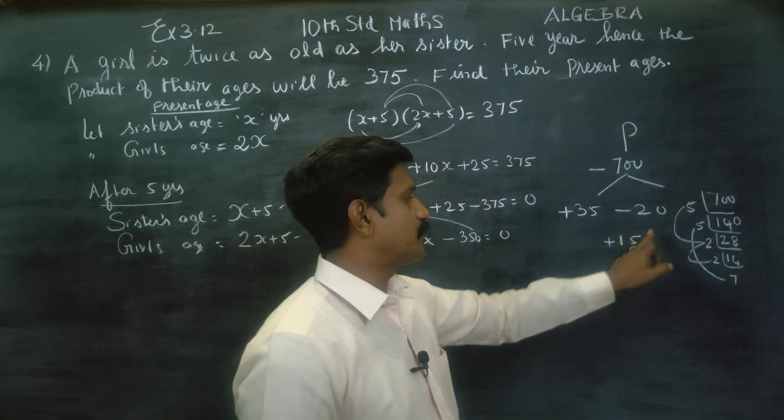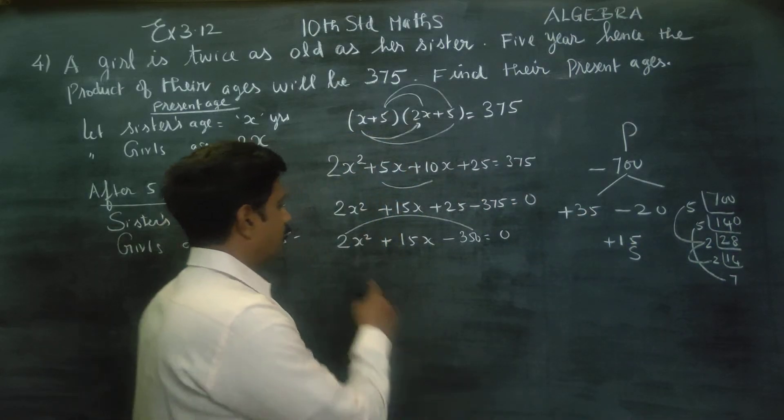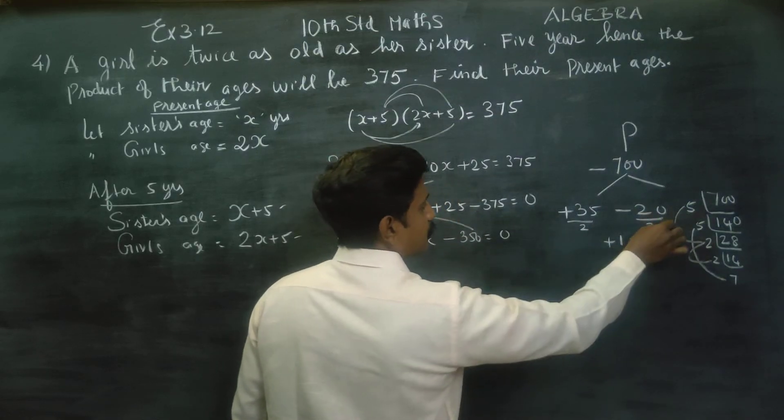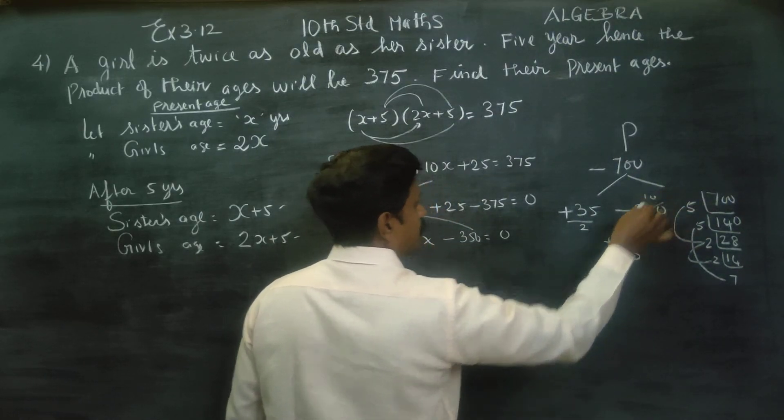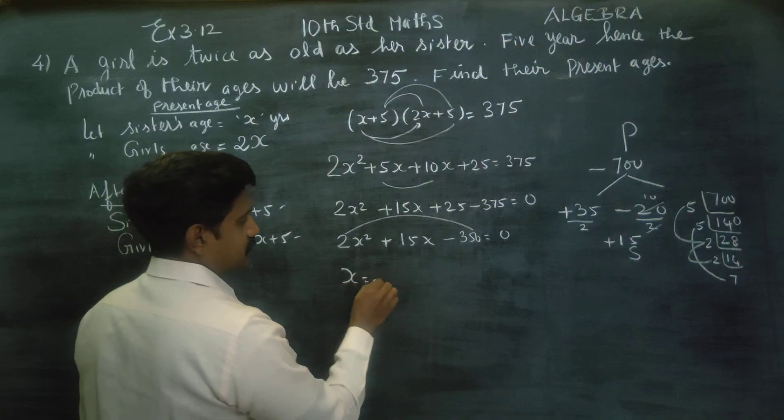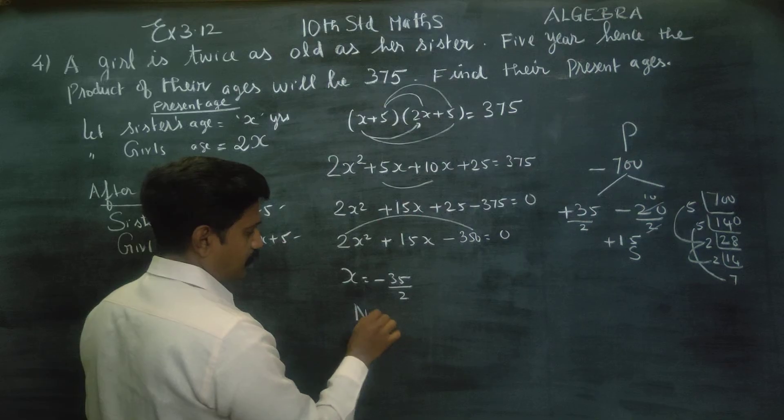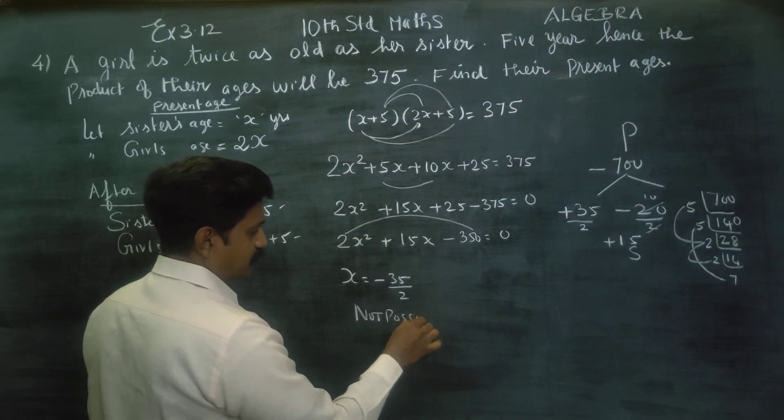Factoring gives x equals 10 or x equals minus 35 by 2. Age negative not possible, not possible.